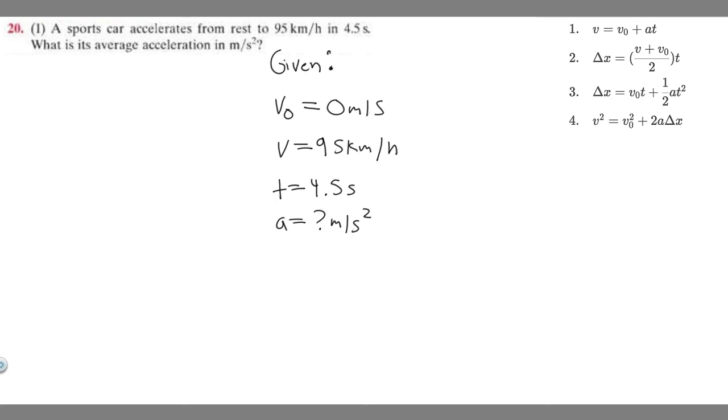We need to make sure that all of our units line up and that they're the same. The velocity is in kilometers and hours, but we need meters and seconds, so they don't line up. We have to change this to meters per second. So let's go ahead and do that: 95 kilometers per hour.